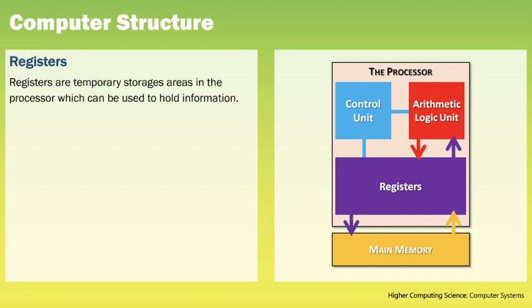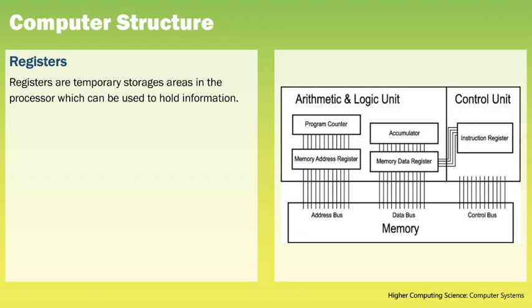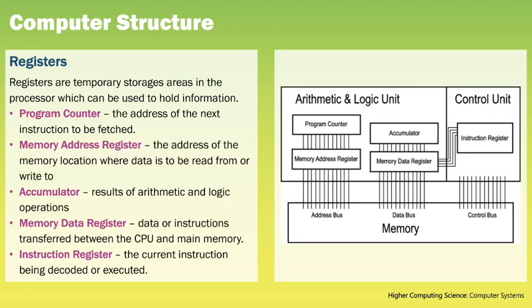At National 5 we said registers are temporary storage areas in the processor used to hold information. At Higher we distinguish between different types of registers. Within the processor there can be up to five: the program counter, which stores the address of the next instruction to be fetched; the memory address register, which stores the address of the memory location to be read from or written to; the accumulator, which stores results of arithmetic and logical operations; the memory data register, which holds data passing to or from the data bus; and the instruction register, which holds the current instruction being decoded or executed.